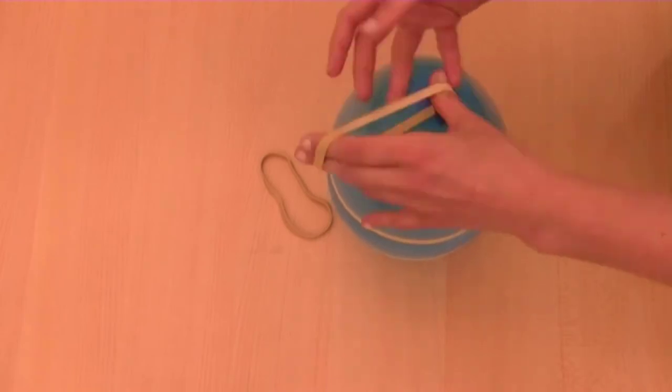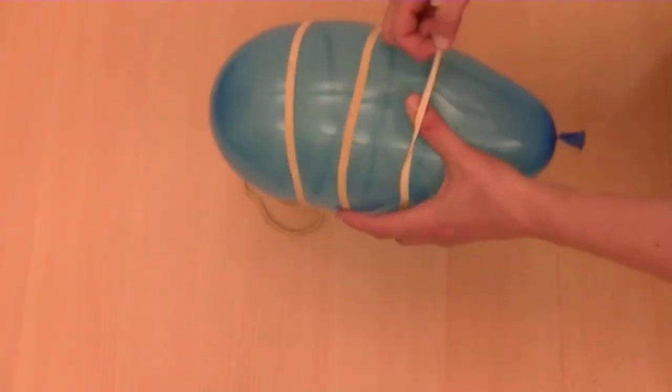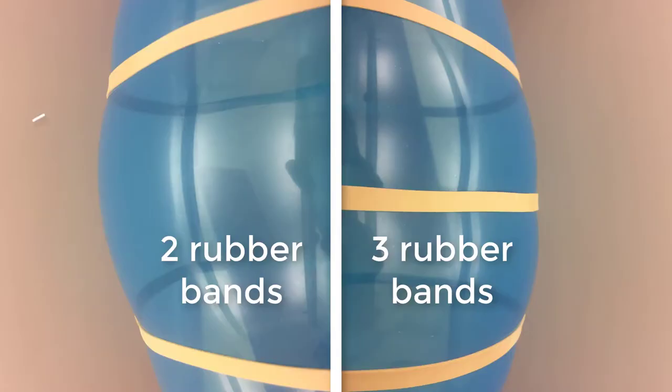When the third band is added, it starts to flatten out the peak created by just the two rubber bands. Interesting. We can still see the pillowing, but it's less pronounced now.